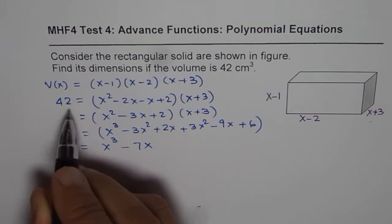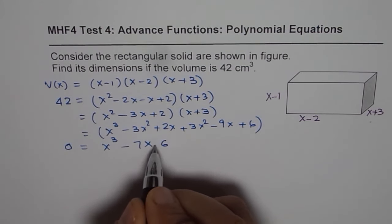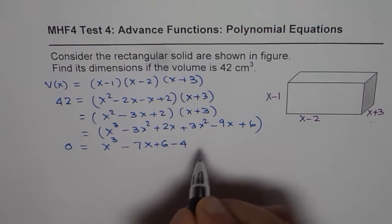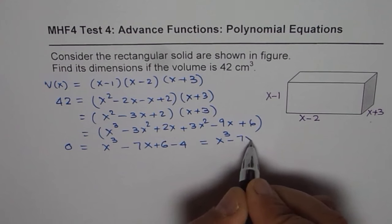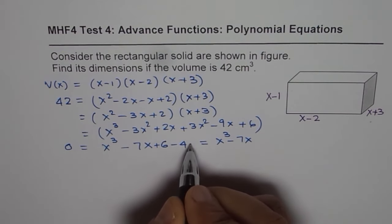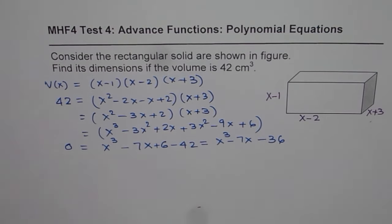And we have 6 minus 42, let me write 6 minus, sorry, plus 6 minus 42 and that is indeed equals to x³ minus 7x and 6 minus 42 is minus 36. So that's the polynomial.